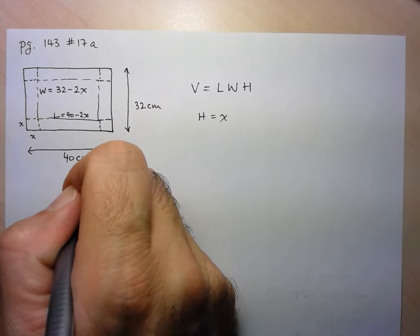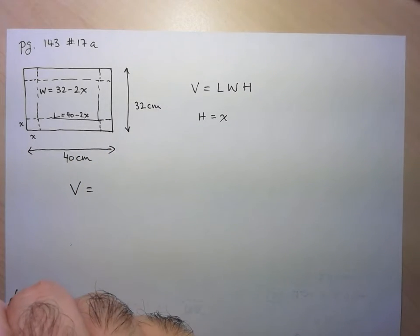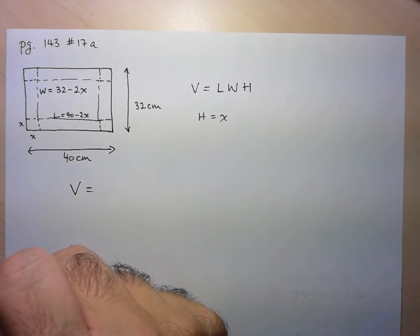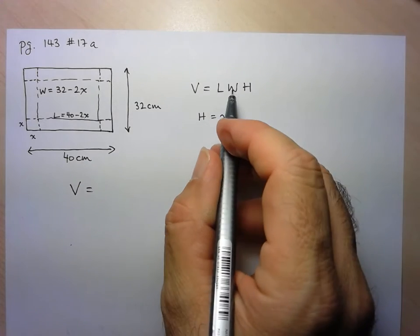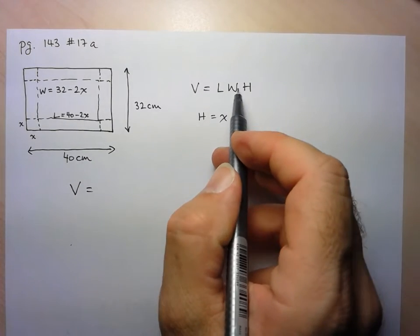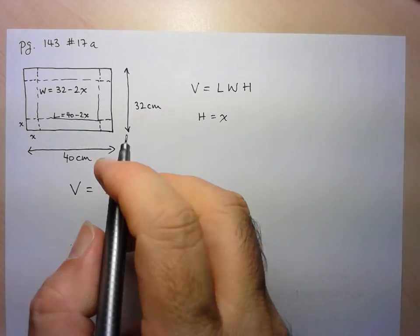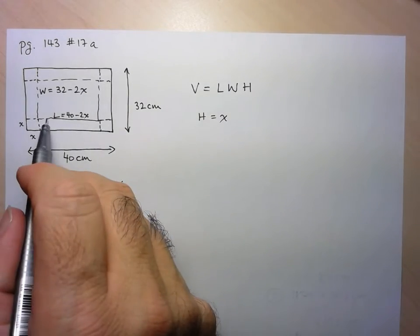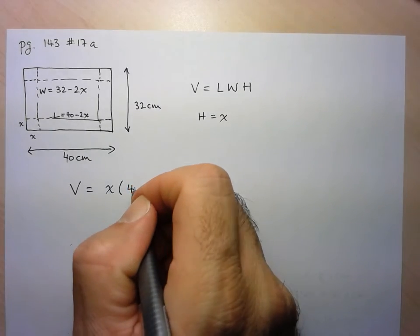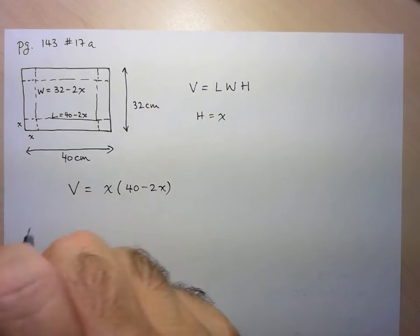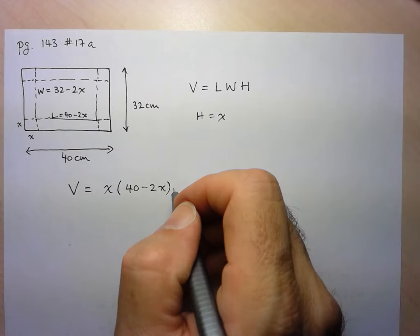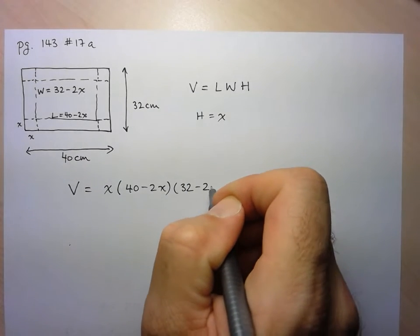So again, length times width times height. I can multiply these in any order. So I'm going to choose to start with the height, which is X. Okay, then I'll go to my length, which we said was 40 minus 2X. And then we've got our width, which is just 32 minus 2X.